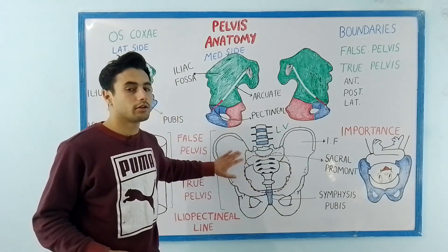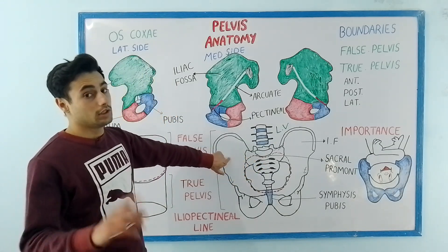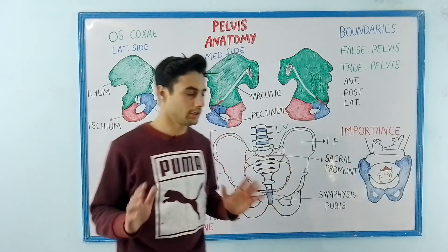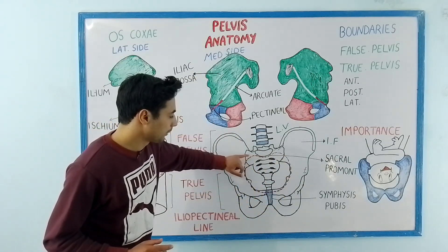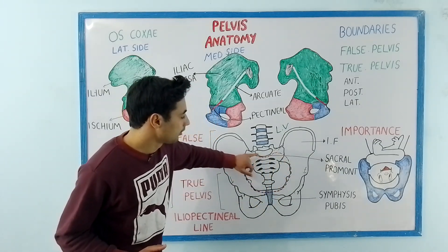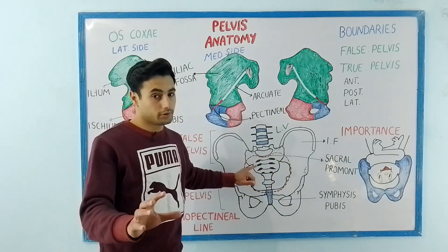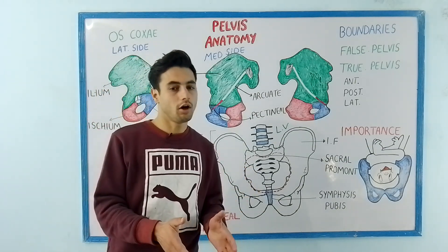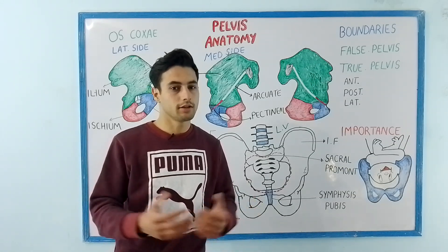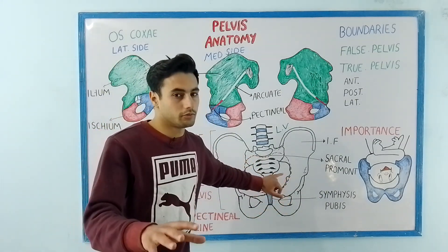The symphysis pubis is the joint between the two pubic bones. Now if we trace the iliopectineal line of one hip bone to the other hip bone, we obtain a structure represented by this dotted red line, which is known as the pelvic brim, also called the pelvic inlet. It is a demarcation of the true pelvis and the false pelvis — this red dotted line divides the pelvis into two parts.